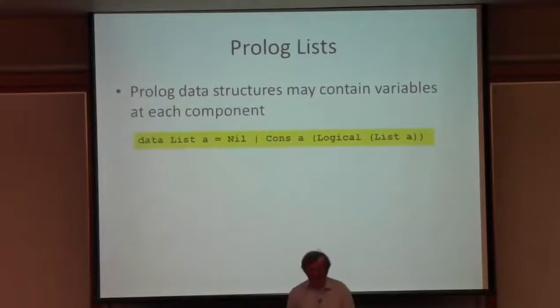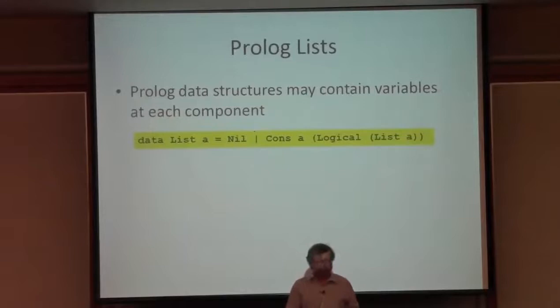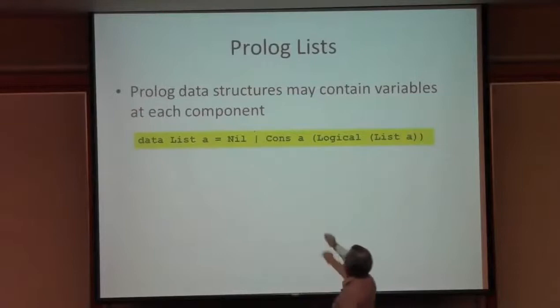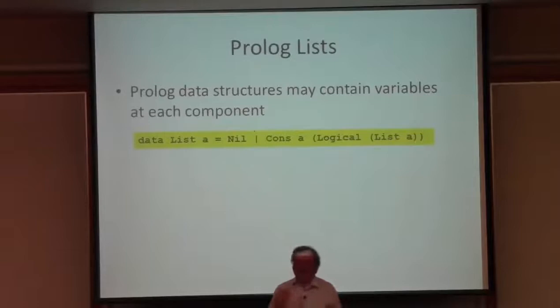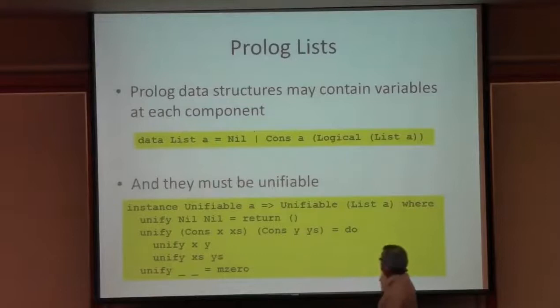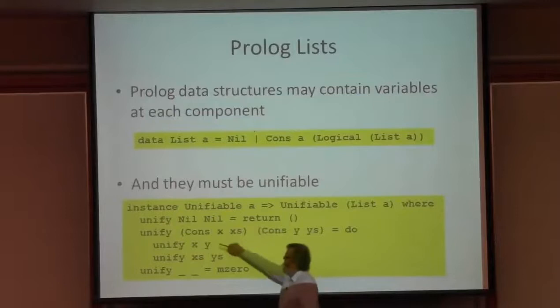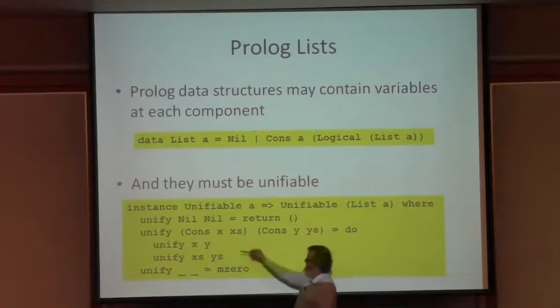If I want to run the append example, I'm going to need Prolog lists — they're not the same as Haskell lists because they contain variables at each point. So I define a Prolog list type with Nil and Cons constructors, but in the tail of the Cons we have a Logical List A, so there might be a variable there. Unifying Prolog lists is easy: unify Nils by doing nothing, unify two Cons lists by unifying the heads and unifying the tails, and if trying to unify Nil and Cons just fail.